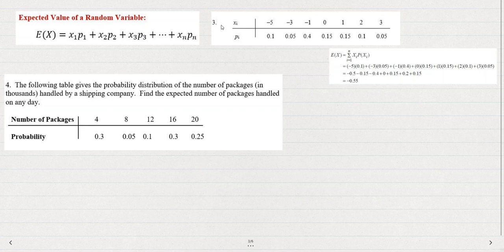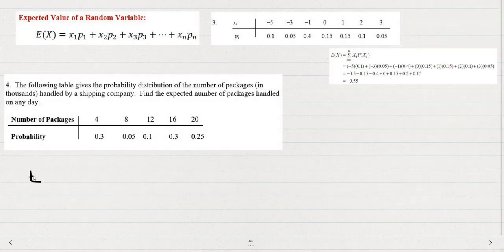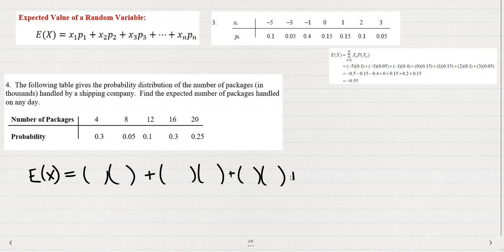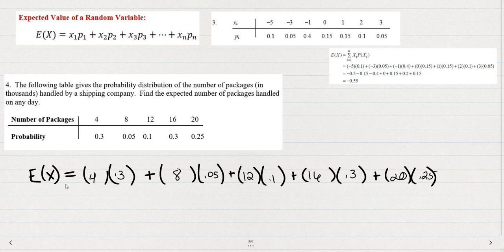Are you ready to do number four on your own? And this is an interesting example. It's the number of packages in thousands that are handled by the shipping company. And we want to find the expected number of packages that are handled on each day. So if we use the formula, we're going to multiply and add, multiply and add one, two, three, four, five times, go ahead and fill those numbers in and see if you can do that without the guidance of the video doing that for you.